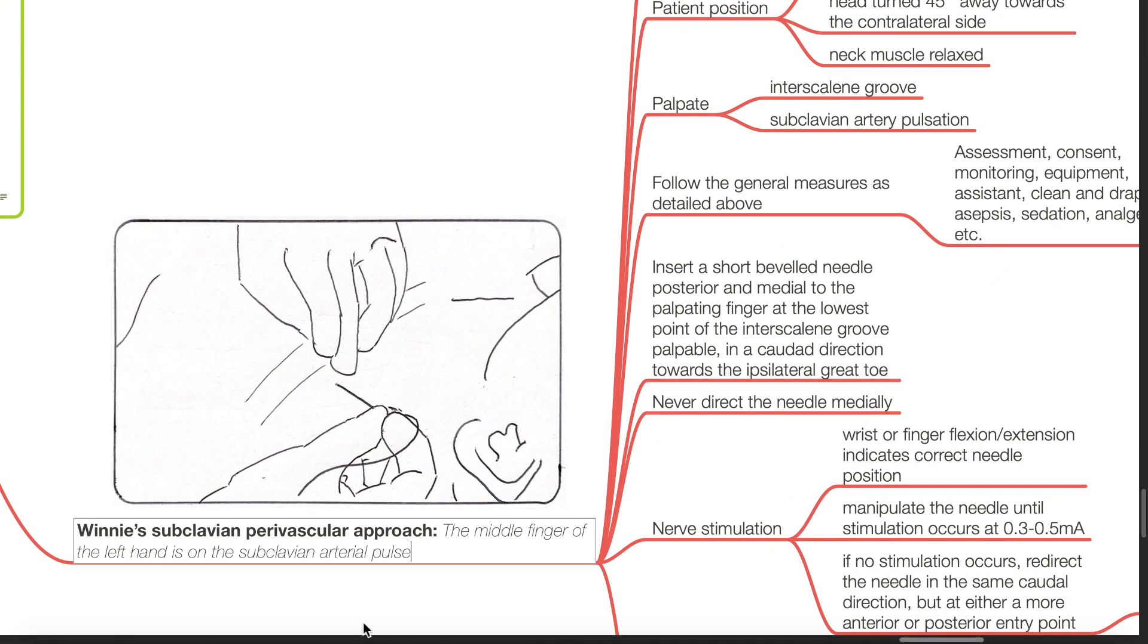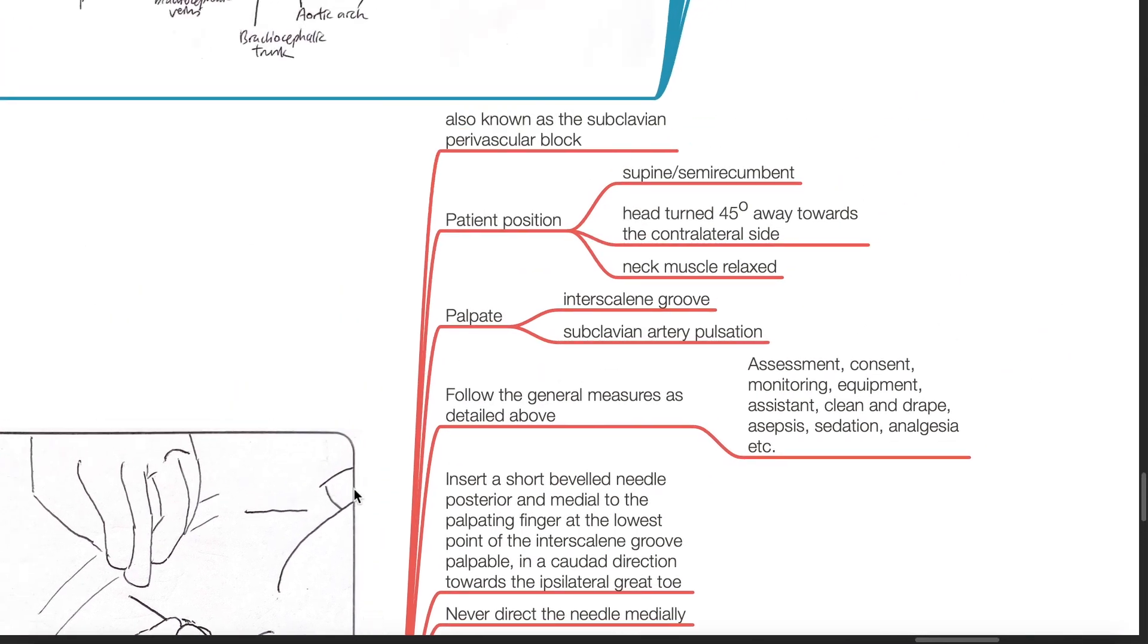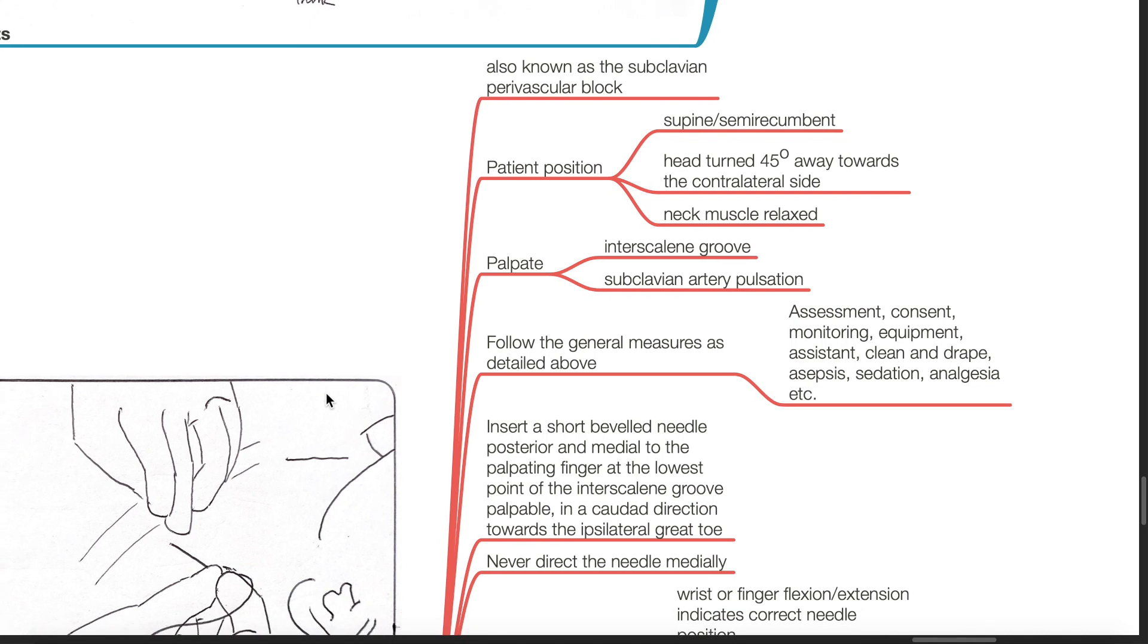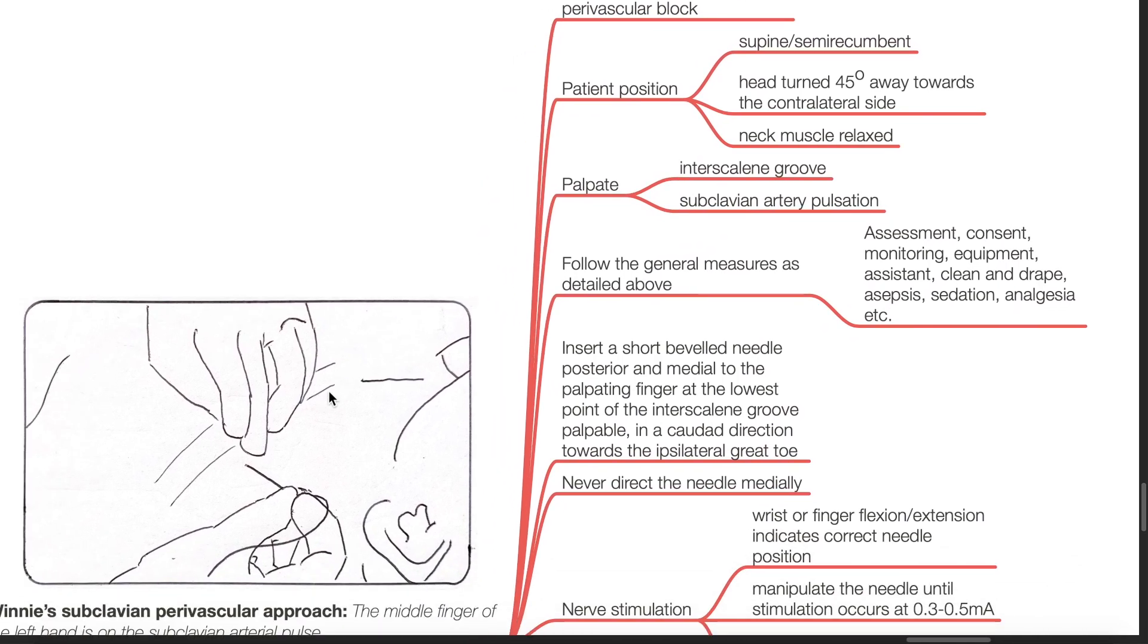Weenie's subclavian perivascular approach. Also known as the subclavian perivascular block. The patient position is supine, semi-recumbent, head turned 45 degrees away towards the contralateral side, neck muscles relaxed.